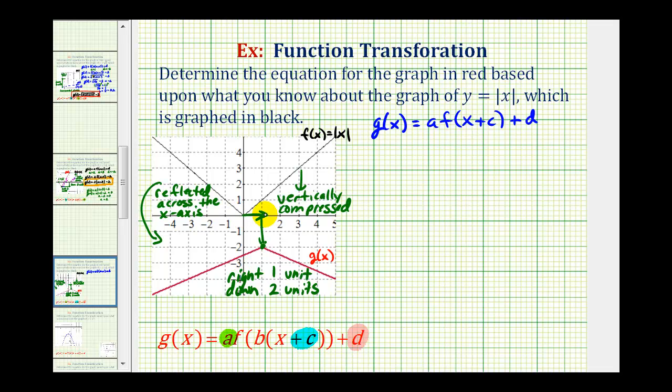Because the graph has been shifted right one unit, that means the value of c is going to be negative one. Remember if c is negative, the graph is shifted right c units, and if c is positive, the graph is shifted left c units. So c is the opposite sign that you might think. But if d is positive, the graph is shifted up, and if d is negative, the graph is shifted down. Because this graph is shifted down two units, d is negative two.